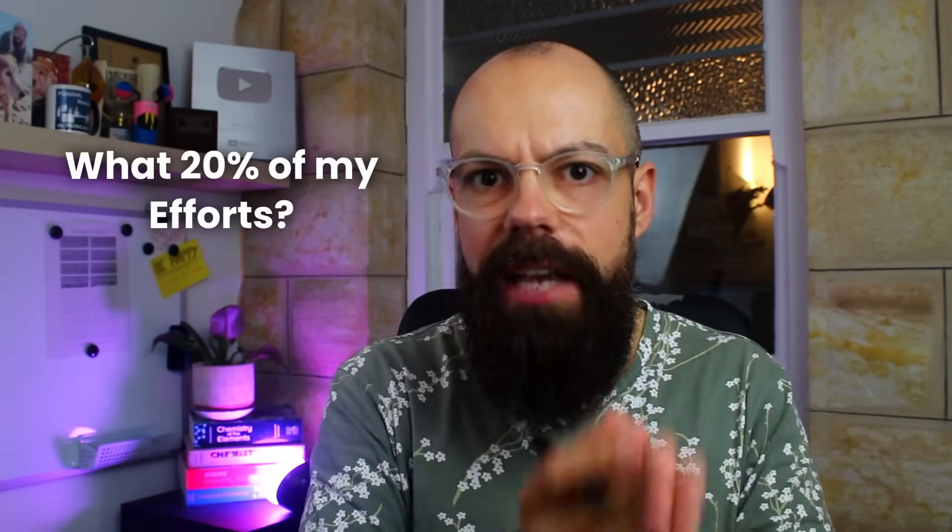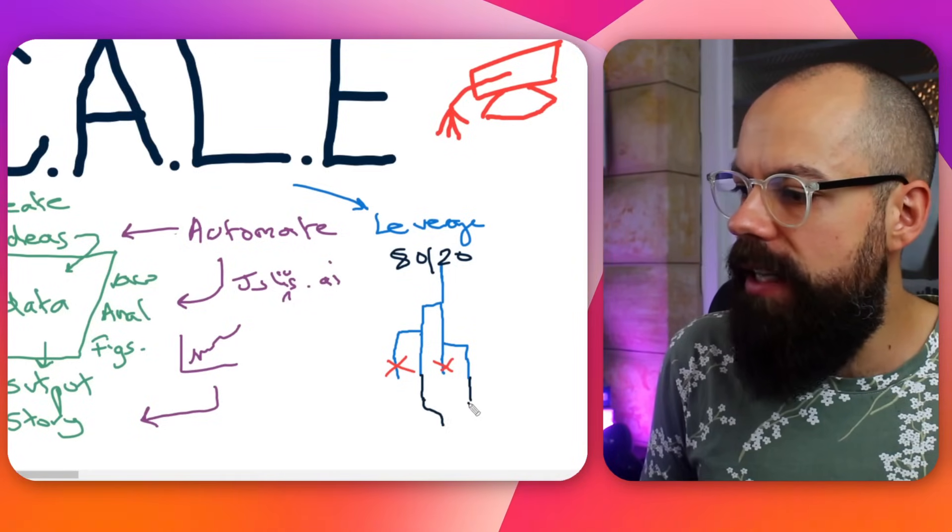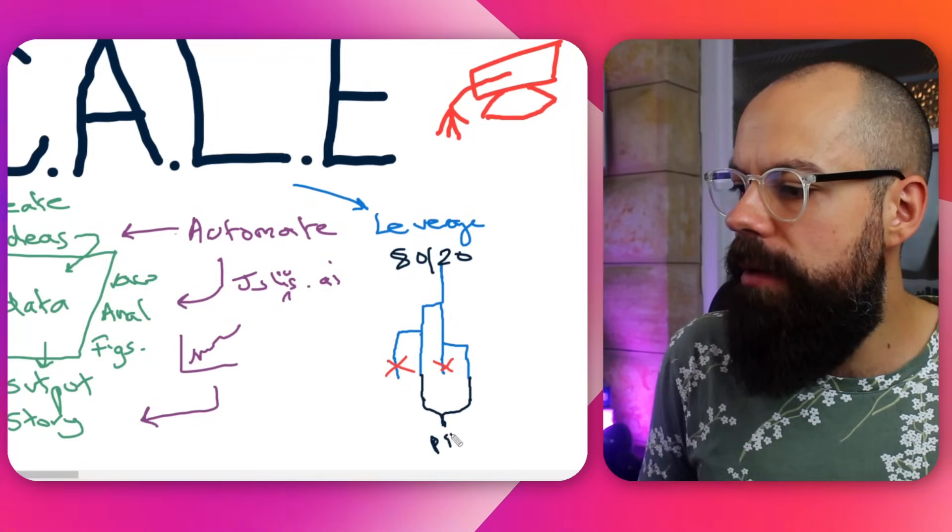Another thing I absolutely love about leverage is the 80/20 principle — every so often look at your research and ask yourself: what 20% of my efforts are giving me 80% of the results? Those are the things that will carry you through to a PhD. Get rid of things you're spending a lot of time on but that aren't giving you the data and outputs you need. Kill them early so they don't eat into your leverage — your time and freedom.